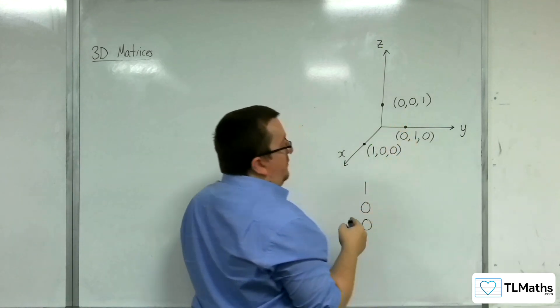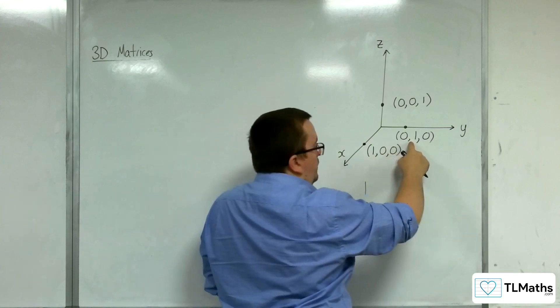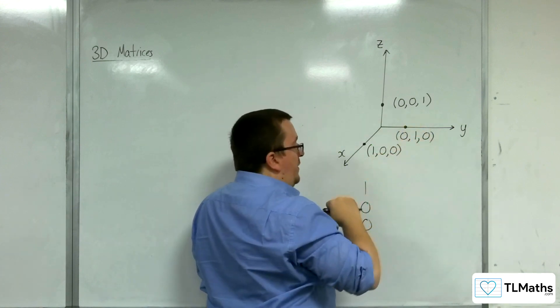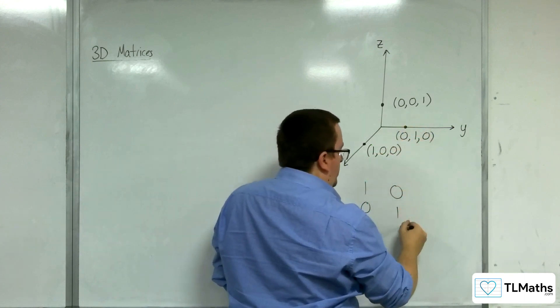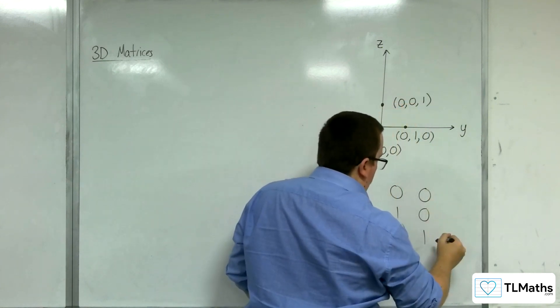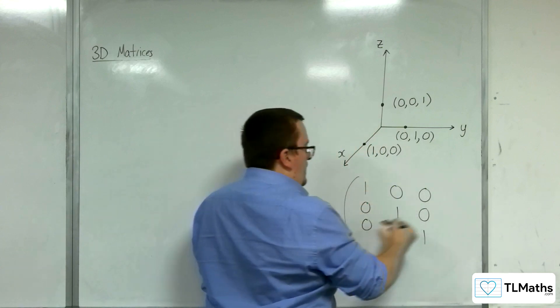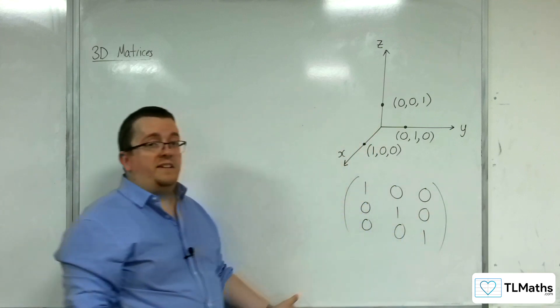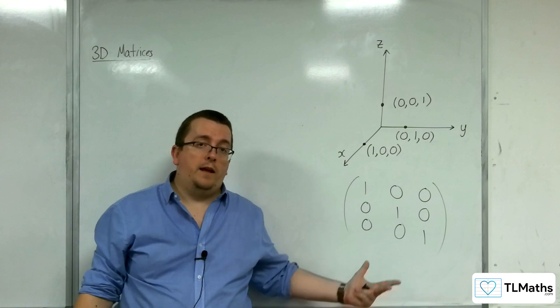And the position vector for the y coordinate, zero, one, zero, is zero, one, zero. And the position vector for zero, zero, one is zero, zero, one. What I've drawn there is the identity matrix for a 3x3 matrix.